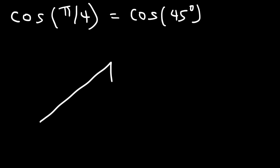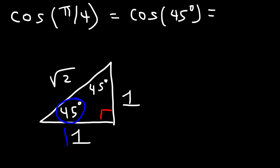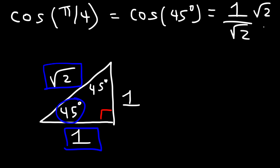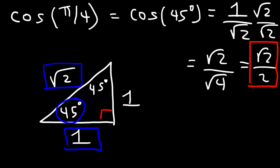There's another special reference triangle you need to know: the 45-45-90 right triangle. Across each 45° angle the side equals 1, and across the 90° angle it's √2. Cosine of 45° = adjacent/hypotenuse = 1/√2. Rationalizing: multiply top and bottom by √2, giving cosine 45° = √2/2.